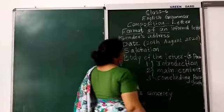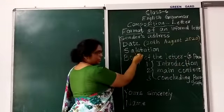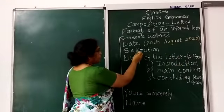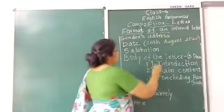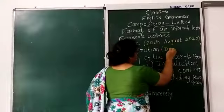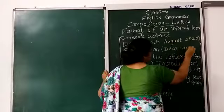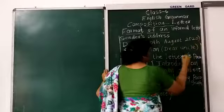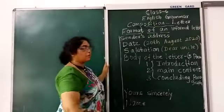This is an example. Next is the salutation. Here also you have to leave a line after the date. Salutation means, for example, if you are writing to your uncle or you can write your friend's name.